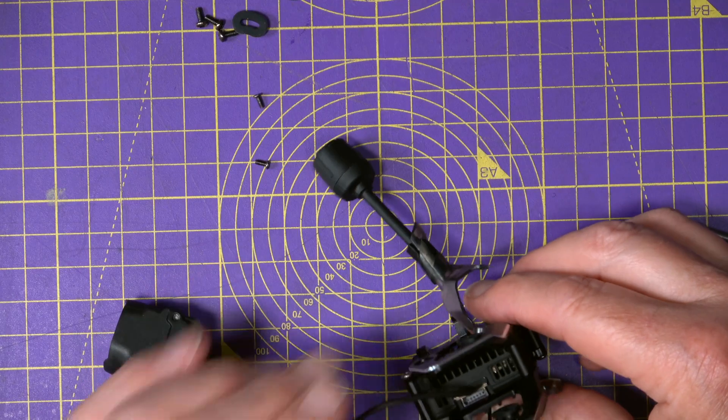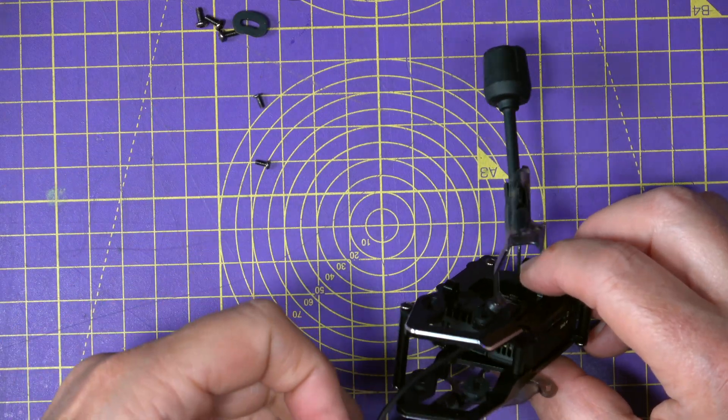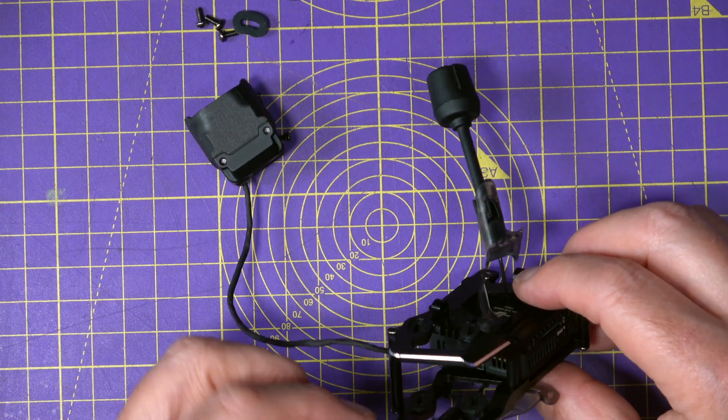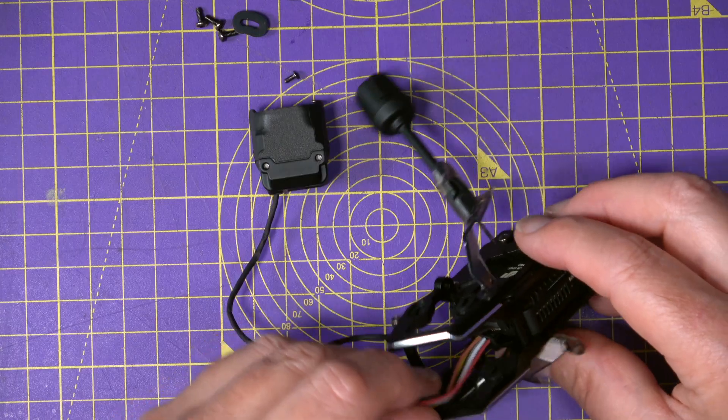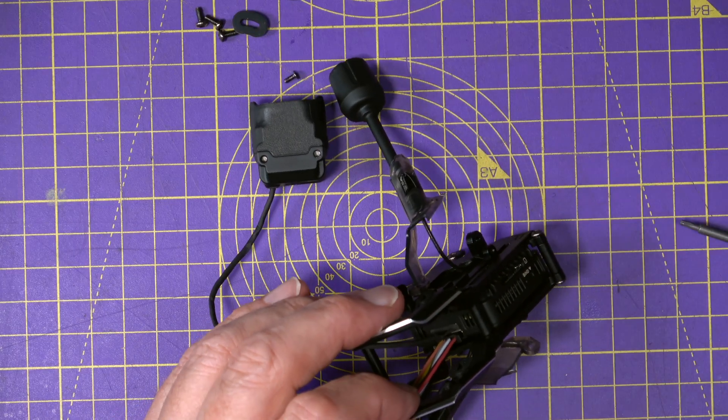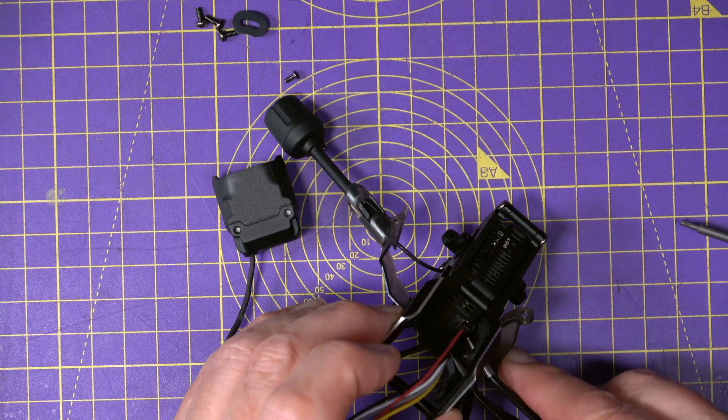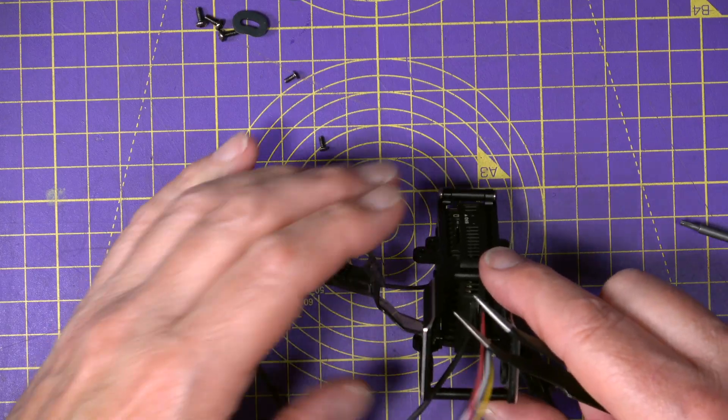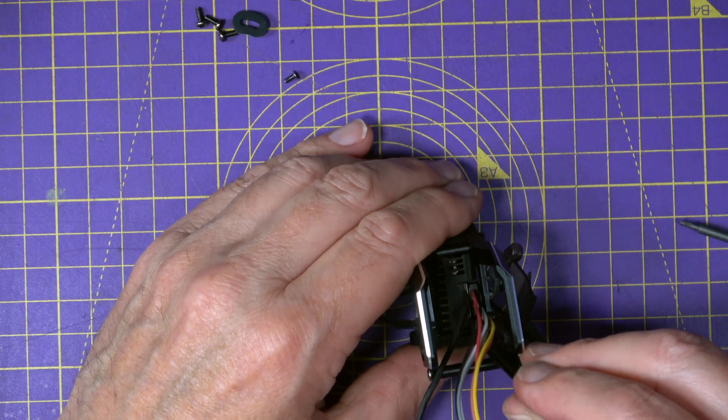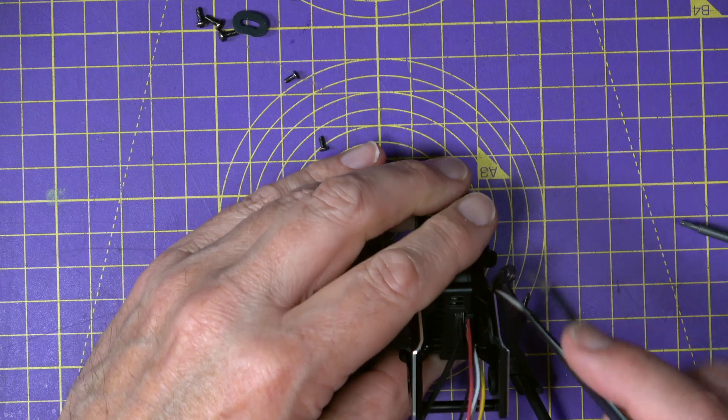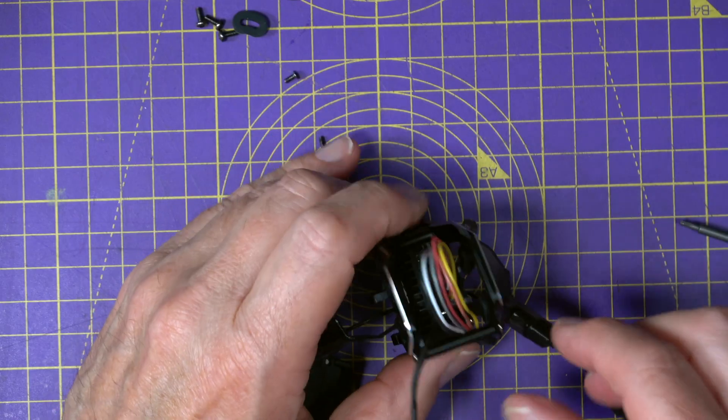And one thing I suggest you do now is actually fit the data in the SBUS cable and the power cable in here. Because once the camera's in, you won't be able to get to it. And that goes that way round. Could of course put that in before, but doesn't really matter. There we go. Just take that out the bottom there, like that.